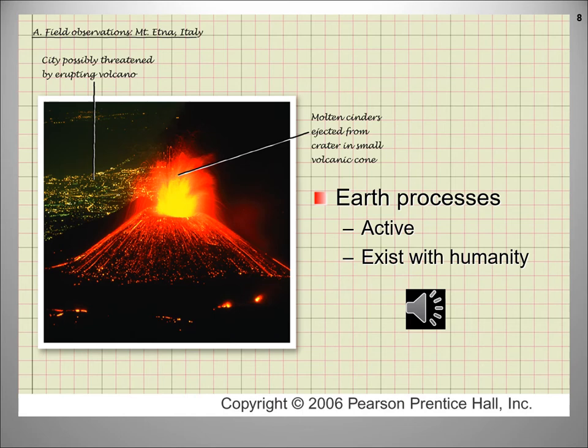Many of Earth's processes are active and we have to exist in relation to those processes. For example, what is unusual about this image? Why is the city in the background? Yet man continues to build and live on parts of the Earth that are very dangerous. Why do we do this? Since we do, what can we do or how can we build to lessen these dangers? Knowledge gained from the study of geology can aid us in where to build. A very simple example is: should you build in a floodplain? Why should you not? What can we do about those who do?